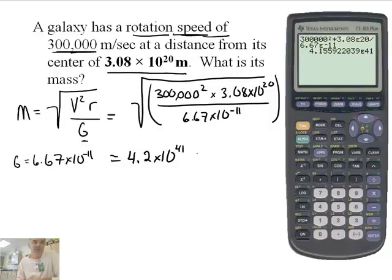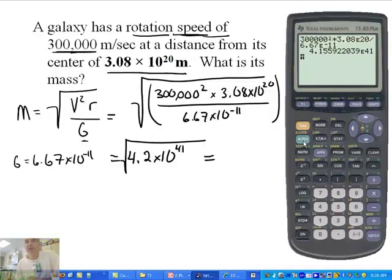And that is not the right answer, because we need to take the square root of that. And so let's figure out what that is. The square root button on the calculator is right here. So I say second square root. And I don't want to retype in my number. So there's a button down here called the ans button. So I can say second ans.